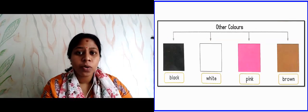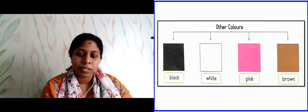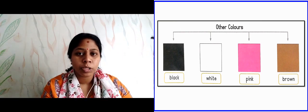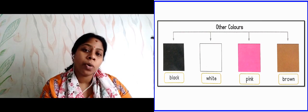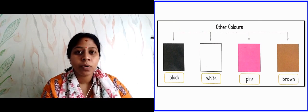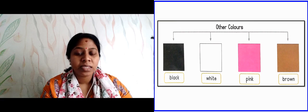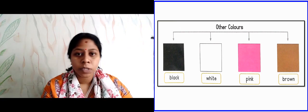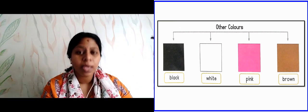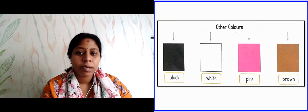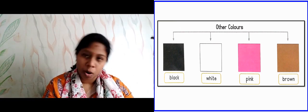In the next slide, you can see it's written other colors. For example, aapke crayon box mein aur bhi colors aata hai na. Usko hum dekhenge usme kaun sa kaun sa hoga. Black, white, pink, brown. Usmein ye colors bhi hota hai.